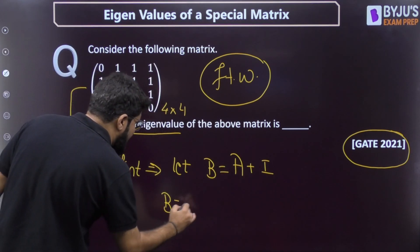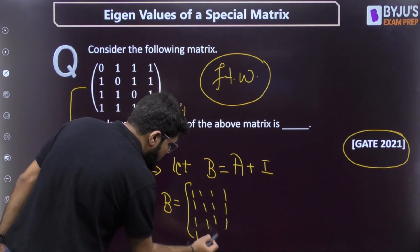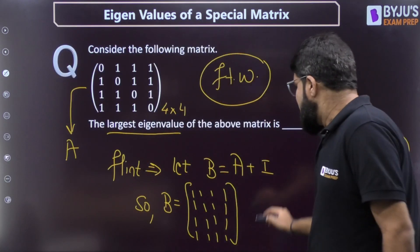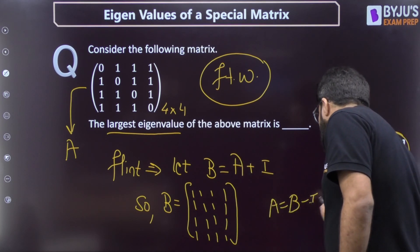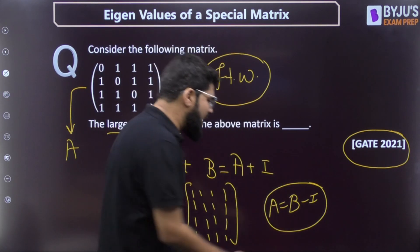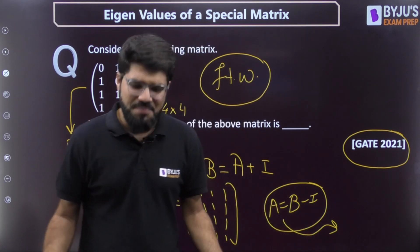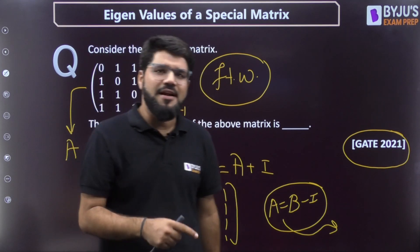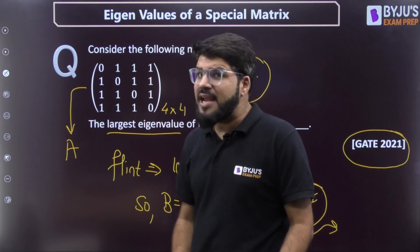After adding the identity matrix, B becomes an all-ones 4×4 matrix, which is exactly the type we just solved. You can now find the eigenvalues of B. Since A = B − I, the eigenvalues of A will be the eigenvalues of B minus one. So if you know the eigenvalues of B, subtract one from each to get the eigenvalues of A. The largest eigenvalue follows directly. Post your answer in the comments!